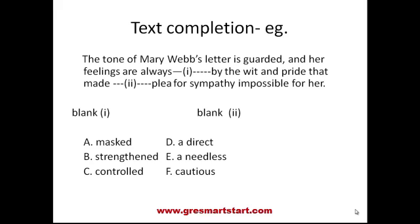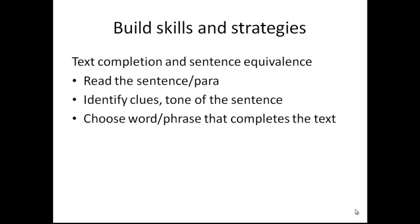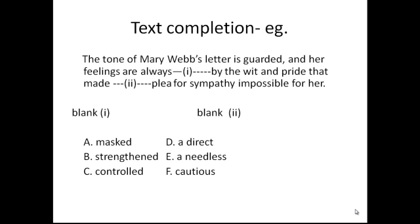Here is an example. The question says: 'The tone of Mary Webb's letter is guarded and her feelings are always [blank] by the wit and pride that made a direct plea for sympathy impossible for her.' Now, the clues here are 'guarded and.' The meaning clue is 'guarded' and the grammatical clue is 'and.' We use 'and' to combine parallel or similar ideas, which means if the tone is guarded, her feelings are also parallel to guarded. Once we understand the requirement of a parallel word, it becomes easy.